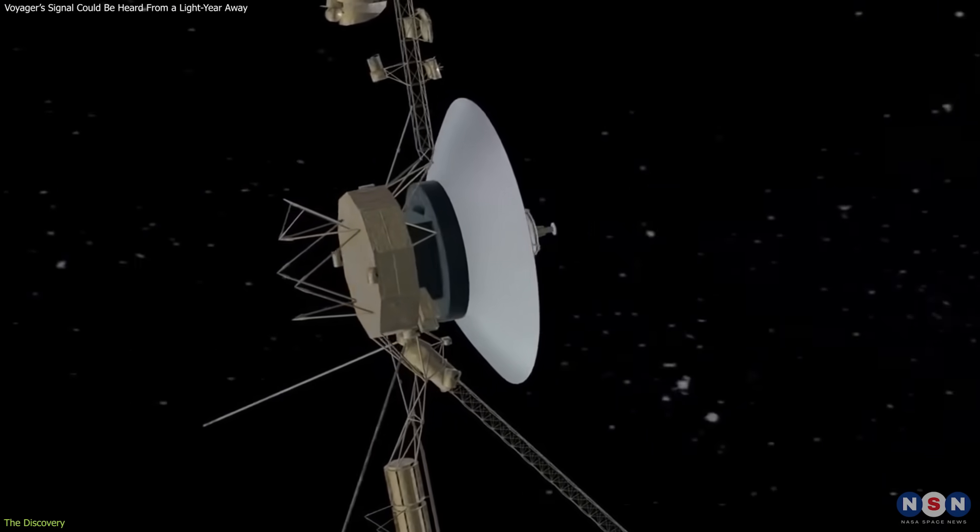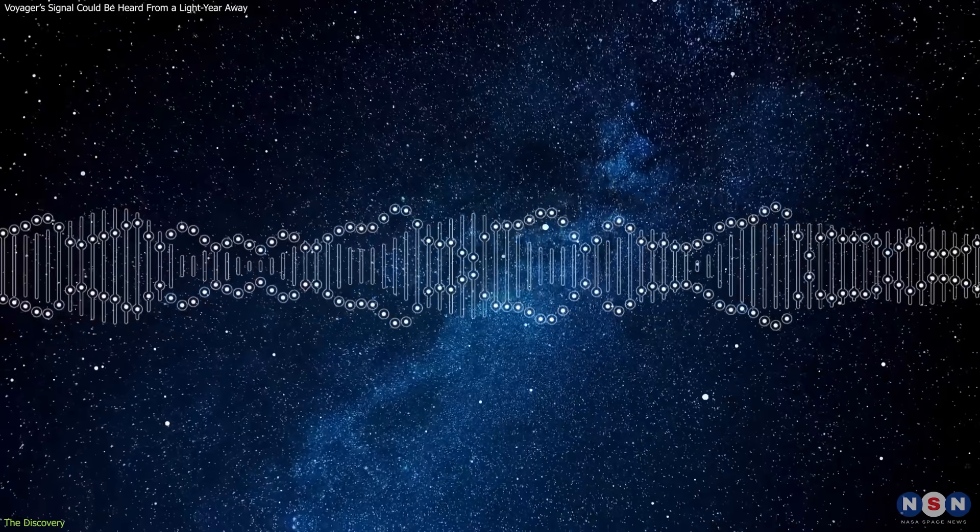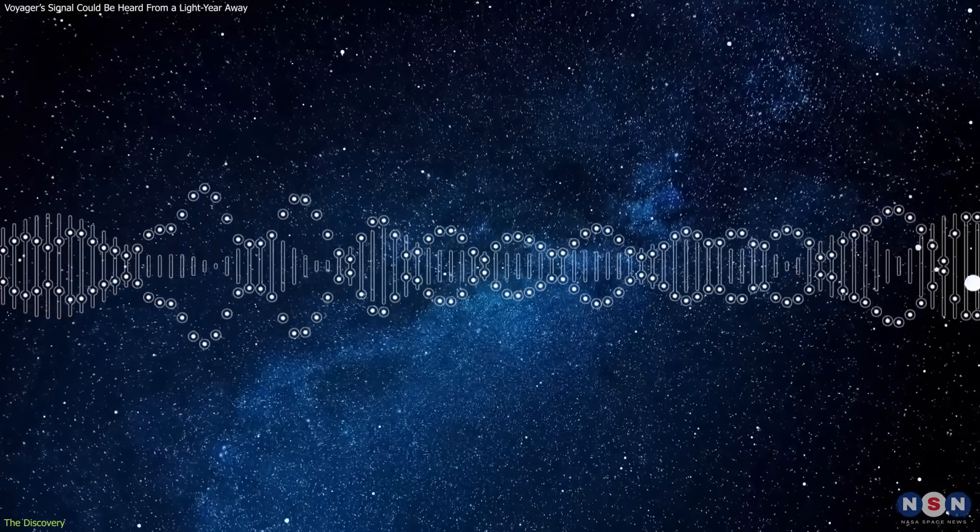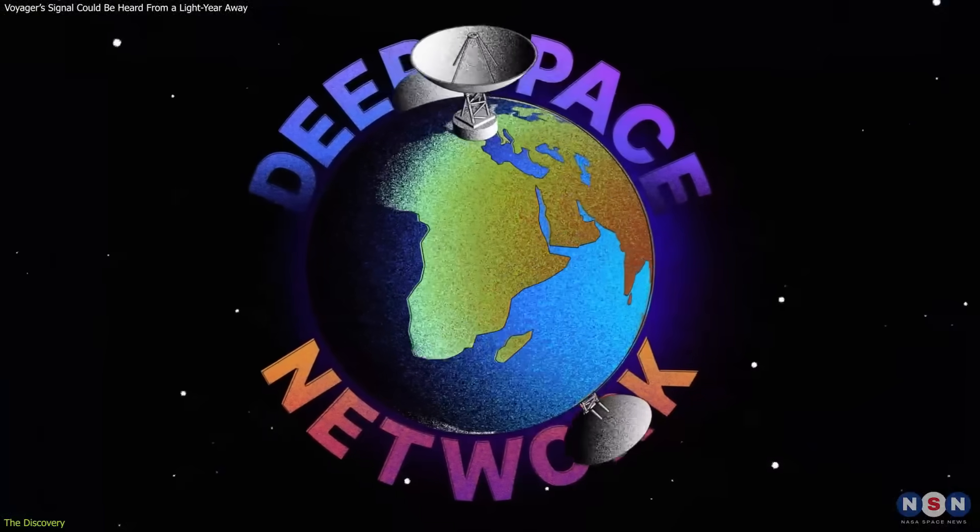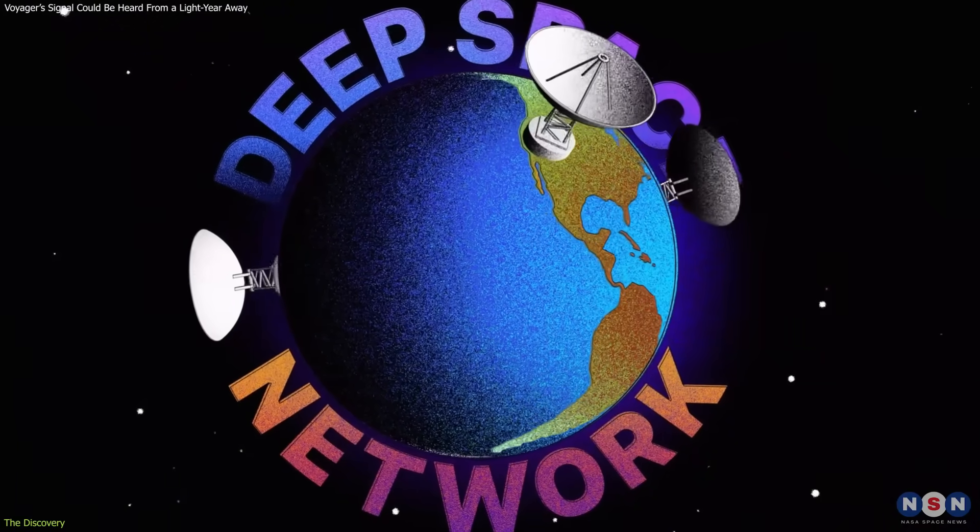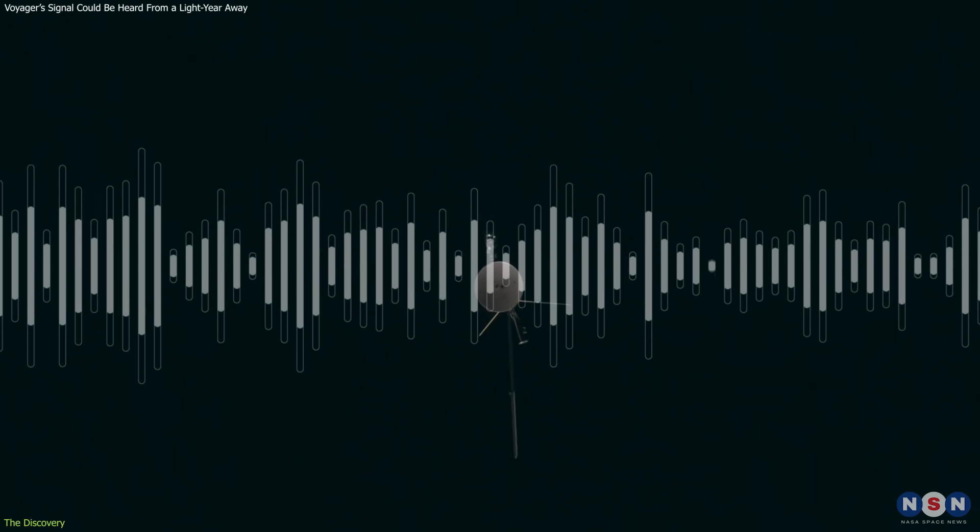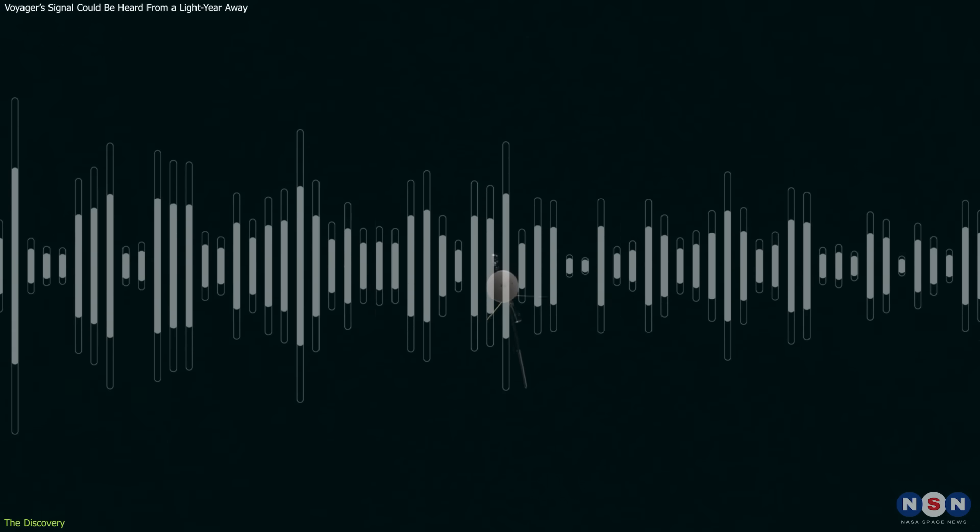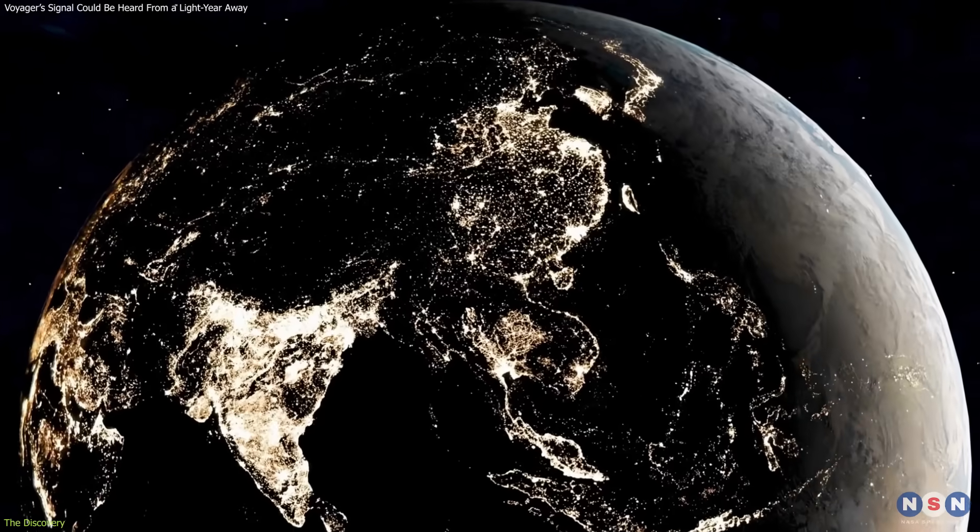This kind of detection range offers a concrete example of how long artificial signals can remain traceable through space, especially when supported by large, coordinated antenna networks like the Deep Space Network. That's a practical, measurable example of what a low-power technosignature looks like from an Earth-level civilization.